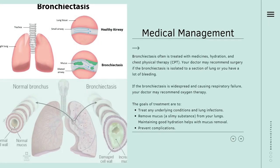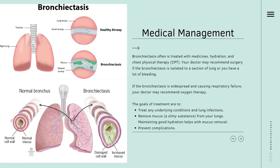Now we have the medical management for bronchiectasis. Bronchiectasis is often treated with medicines, hydration, and physical therapy. Your doctor may recommend surgery if the bronchiectasis is isolated to a section of lung or you have a lot of bleeding. If the bronchiectasis is widespread and causing respiratory failure, your doctor may recommend oxygen therapy. The goals of treatment are to treat any underlying conditions and lung infections, remove mucus from your lungs — maintaining good hydration helps with mucus removal — and prevent complications.